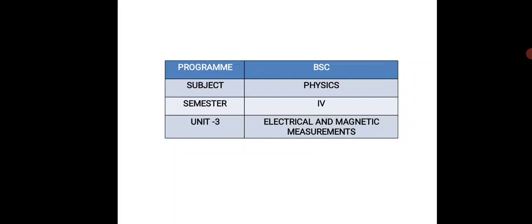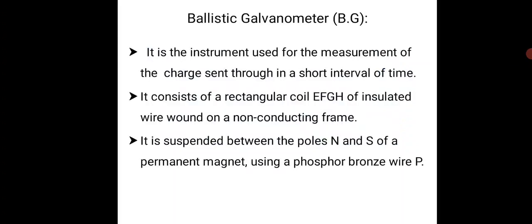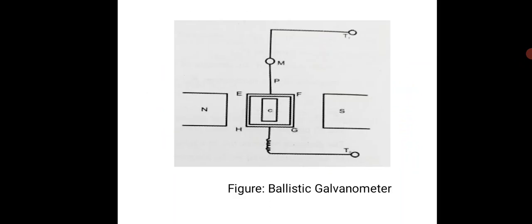This is the diagram of a ballistic galvanometer. It consists of a rectangular coil EFGH placed in a non-conducting frame. The upper part of the ballistic galvanometer is connected with the coil.